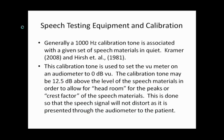Generally, a 1000 Hz calibration tone is associated with a given set of speech materials in quiet — discussed by Kramer and Ira Hirsch. This tone calibrates the VU meter on an audiometer, typically set to 0 dB VU. The calibration tone may be 12.5 dB above the level of the speech materials to allow headroom for the peaks or crest factor of the speech, reducing the incidence of distortion as words are presented through the audiometer.